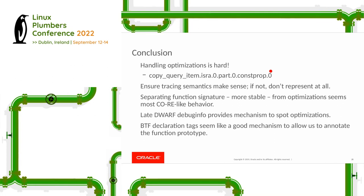The key thing we want in any solution is to ensure tracing semantics make sense. I'd rather err on the side of not representing something at all than representing something that could be misinterpreted. Separating the function signature — which is more stable — from any optimizations that might occur under the hood is the most compile-once run-everywhere-like behavior. The late DWARF debug info gives us a mechanism to spot some of these optimizations and fix things up, and BTF declaration tags seem like a really good mechanism to annotate function prototypes. I think the raw number of around 800 '.isra' functions doesn't reflect the pain they can cause, and these optimizations seem to happen precisely where the code is complex and messy — the exact places you want observability.